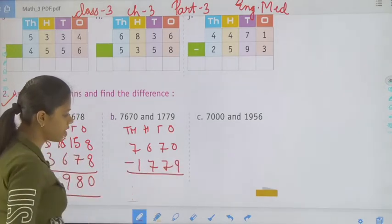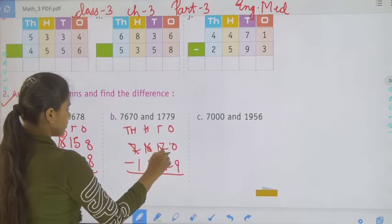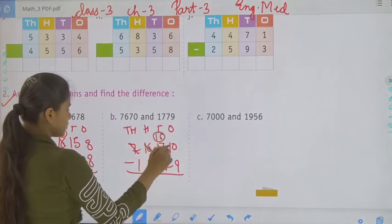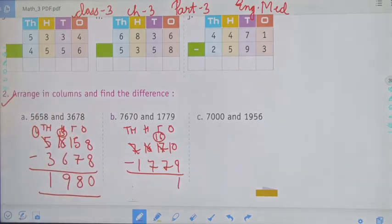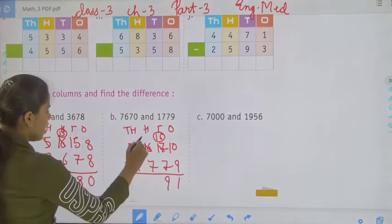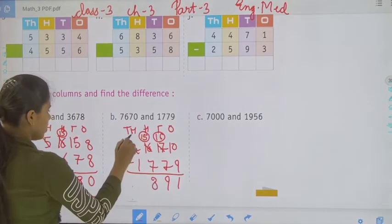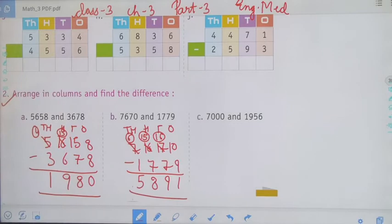Again, 0 minus 9 — 9 cannot be subtracted, so we have to take a borrow. That is 16 — 10 minus 9, it will be 1. 16 minus 7, it will be 9. And 15 minus 7, it will be 8, and 6 minus 1, it will be 5. That is 5,891.